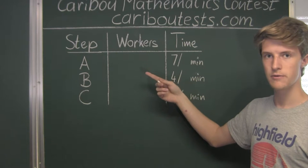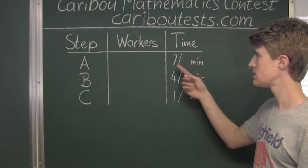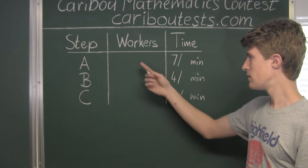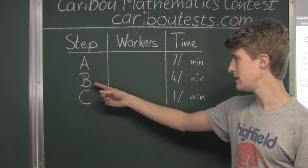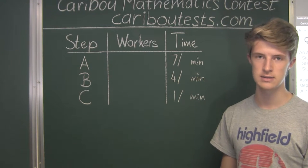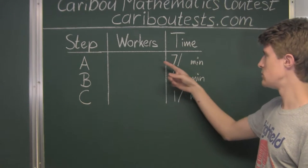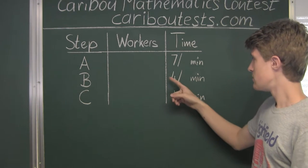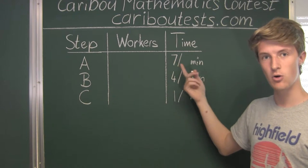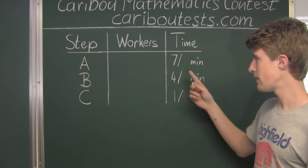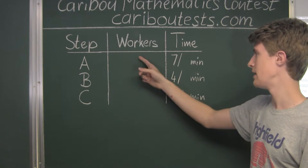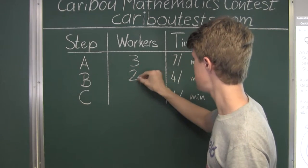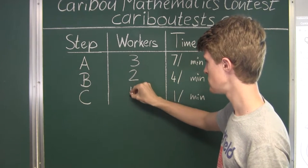Now let's see what would happen with four workers for step A. We'd only have two workers left, and both B and C would need one worker each. For A: 7/4 minutes, which is less than 2. But for step B with only one worker, it would be 4/1 = 4 minutes. Already, that is more than the maximum time required when we had three workers for step A. Therefore, the most efficient distribution is three workers for step A, two workers for step B, and one worker for step C.